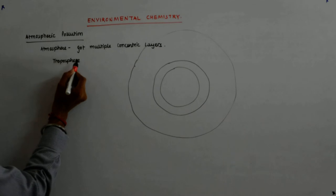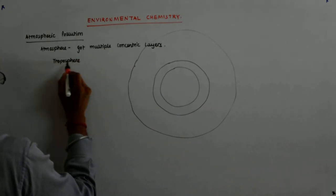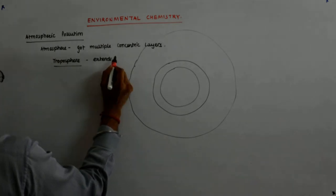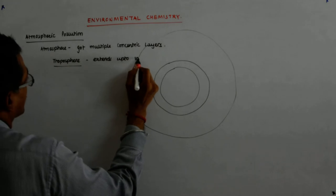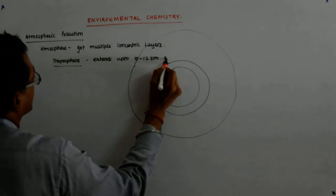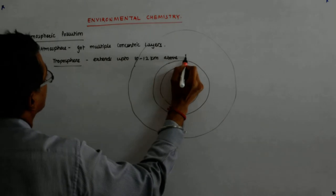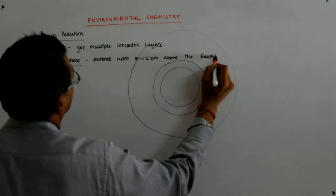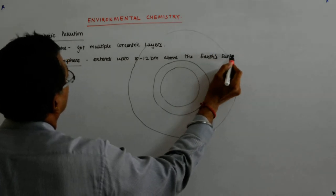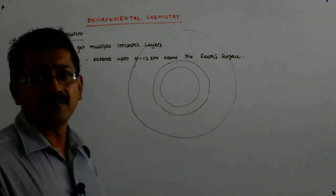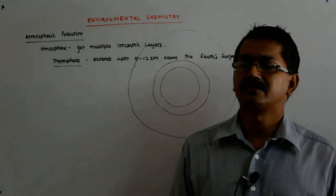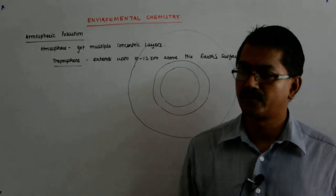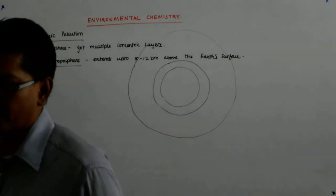Troposphere which extends up to 10 to 12 kilometers above the surface. What is the difference between atmosphere and troposphere? Whatever region which contains even the slightest amount of air, that is up to 400 kilometers, that is all atmosphere. So these are layers in the same atmosphere.